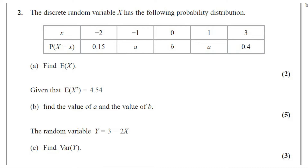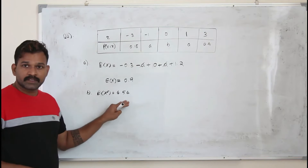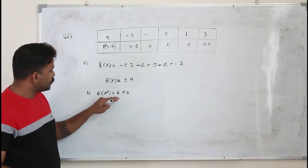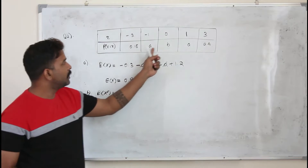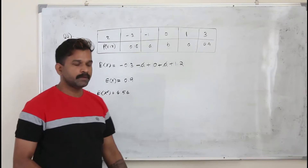Given that E of x squared is 4.54. Part B: find the value of A and the value of B. This question carries five marks. In part B, you are given E of x squared, which is 4.54, and they want you to find the value of A and B.